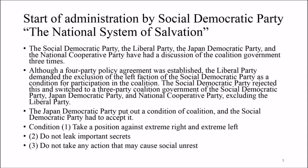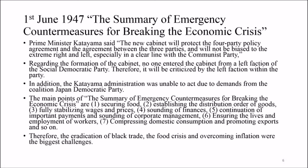The conditions set by the Japan Democratic Party were: Condition 1 — take a position against extreme right and extreme left; Condition 2 — do not leak important secrets; Condition 3 — do not take any action that may cause social unrest.